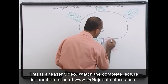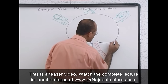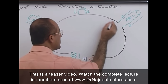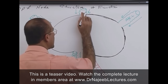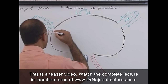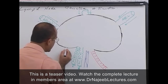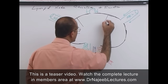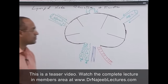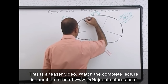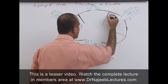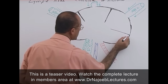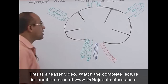This is the capsule of the lymph node. This capsule is made of collagen dense connective tissue. And this capsule sends connective tissue partitions — trabeculae — within the substance of the lymph node.